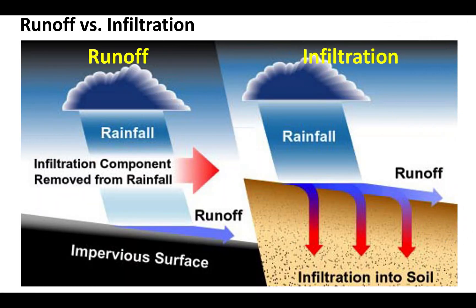Looking at these two pieces of the water cycle more closely: runoff is when water stays on the surface as lakes, rivers, oceans, and even puddles after a rainstorm. Infiltration, on the other hand, means the water is going into the ground, so after a while you don't even know the water was there anymore, because it's stored underneath the ground as something called groundwater.